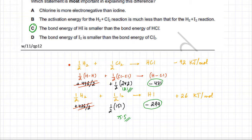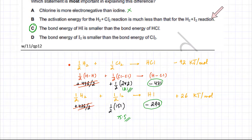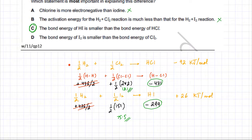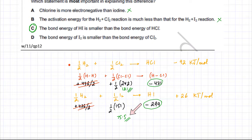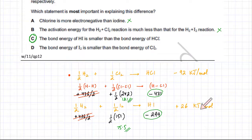Looking at the other options: option A states chlorine is more electronegative than iodine, but that has nothing to do with bond energies or explaining enthalpy changes. Option B states the activation energy for H2 and Cl2 is much less than for H2 and I2, but activation energy is not relevant to overall enthalpy change. Option D states the bond energy of I2 is smaller than that of Cl2 — true, but that difference is not large enough to explain the overall enthalpy difference. Therefore, option C is the most important explanation.